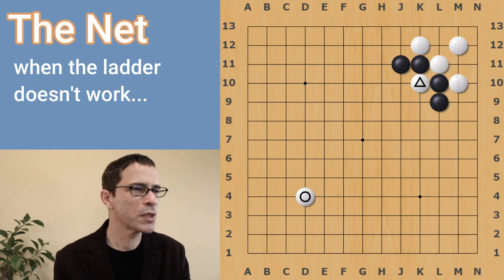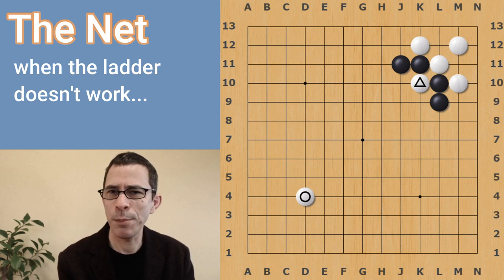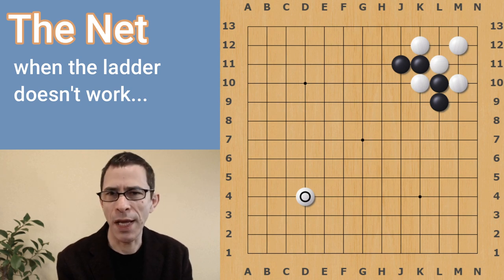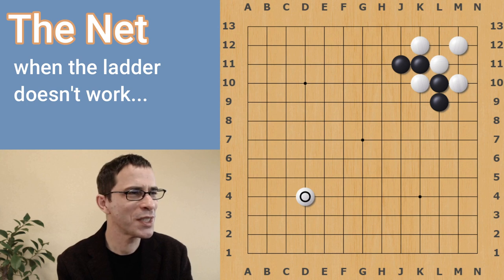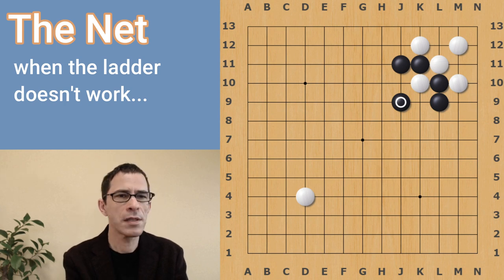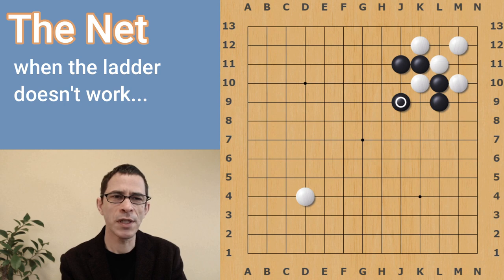We're starting with the assumption that black wants to play a move that will capture this white stone. So this is the net. The word net comes from a fishing net because it's very similar to throwing a net on water. The stone that black is going to play doesn't even touch the white stone. It's like this.